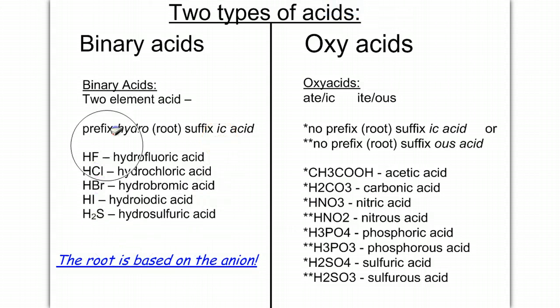And we'll practice this in two more slides. Now, oxyacids are on the right, and an oxyacid is going to contain three different elements usually. Hydrogen, for sure, is going to be the first element. Then we have a second element, which could vary. And then the third element, guaranteed, has to be oxygen, which is why these are called oxyacids, because they contain oxygen.